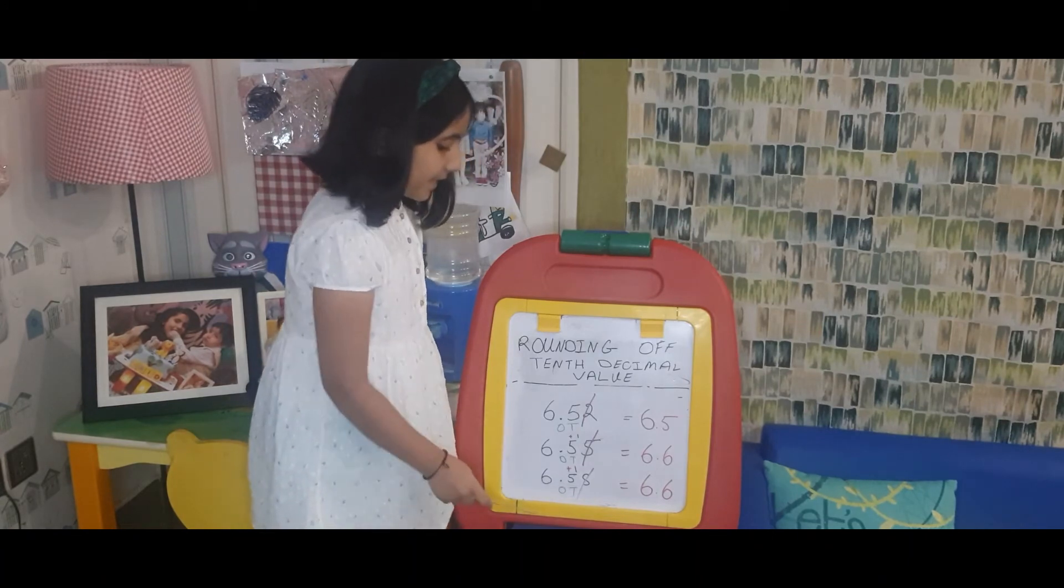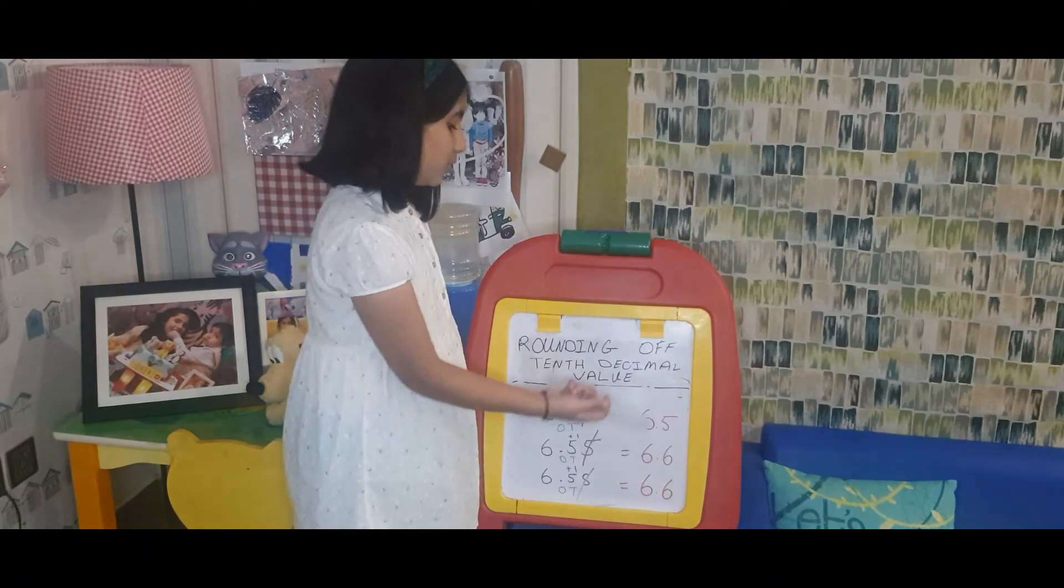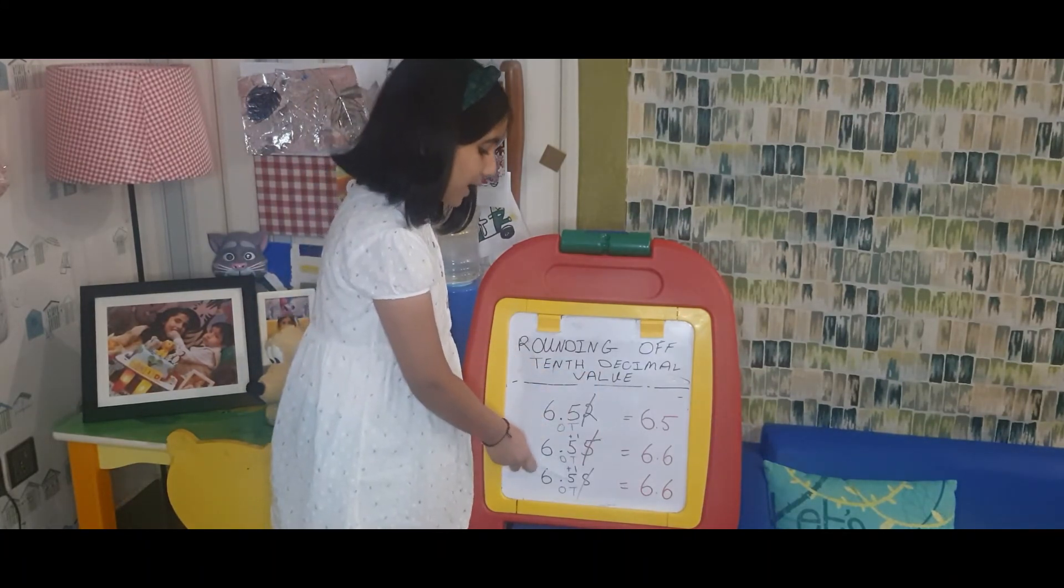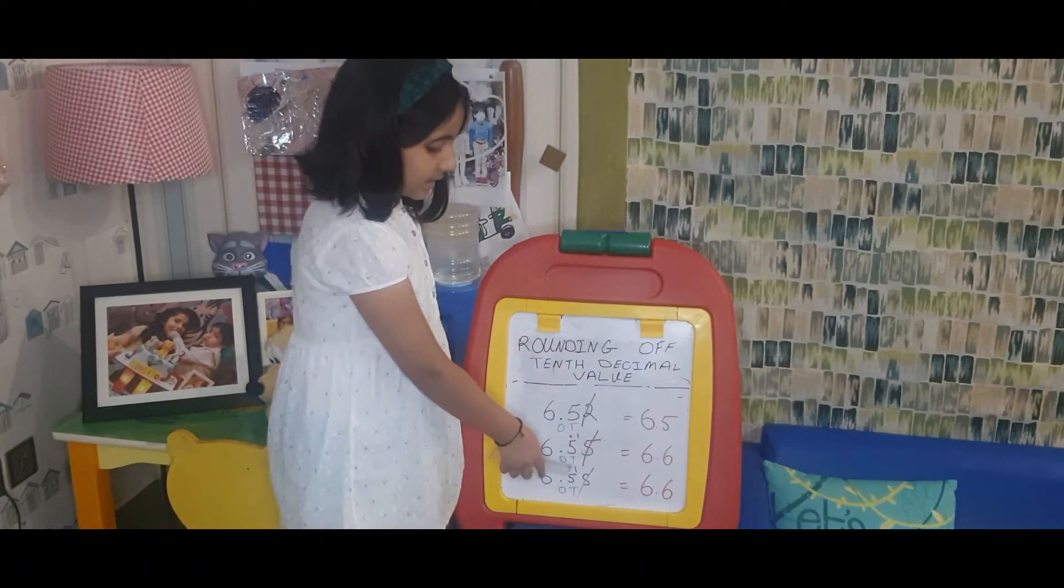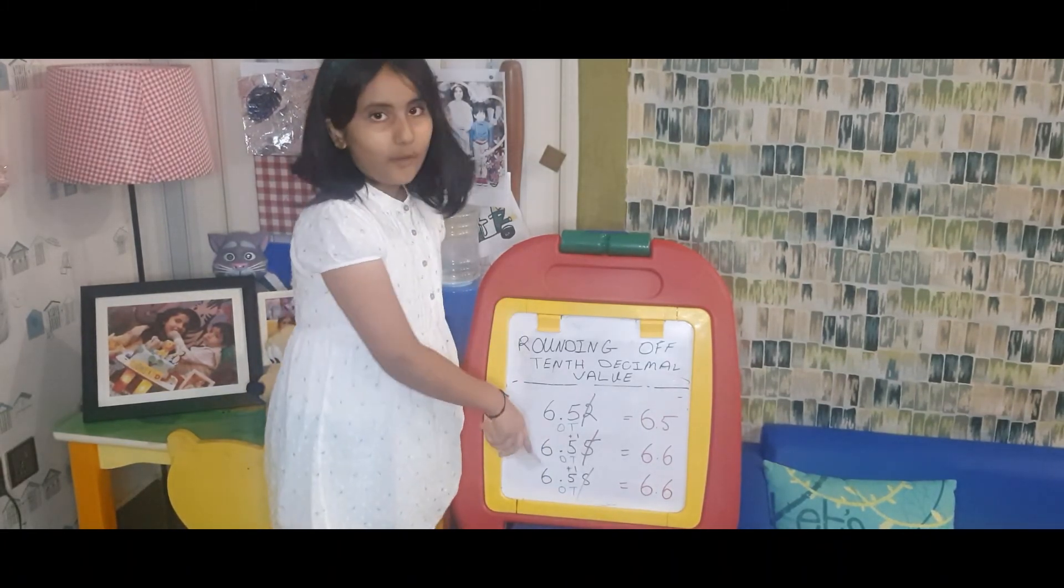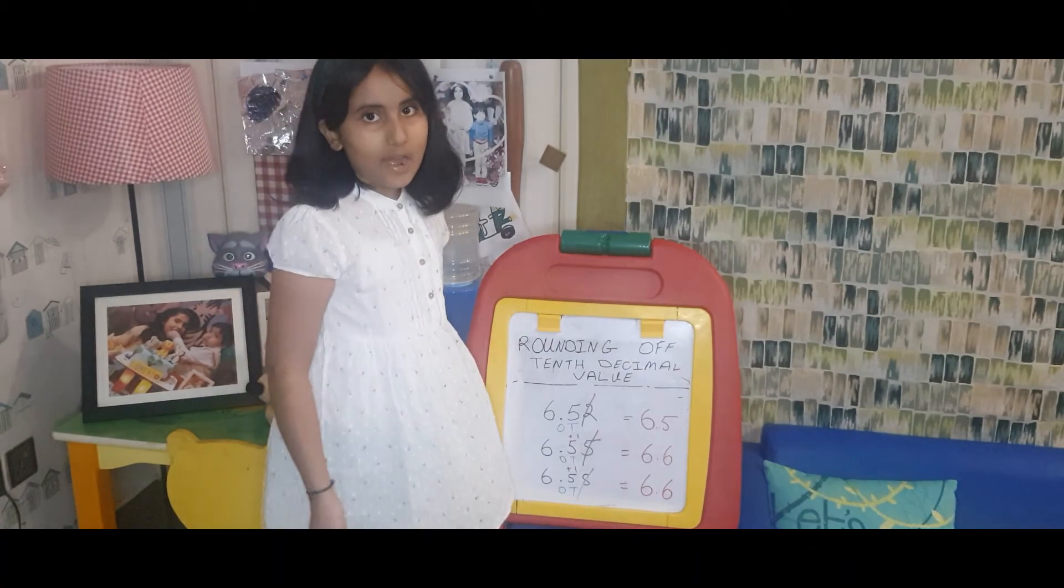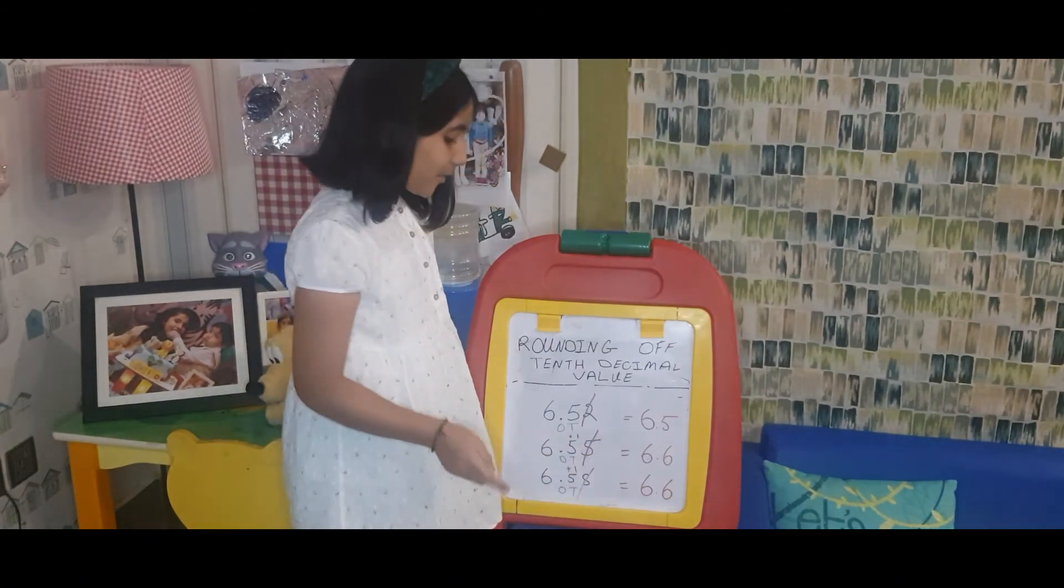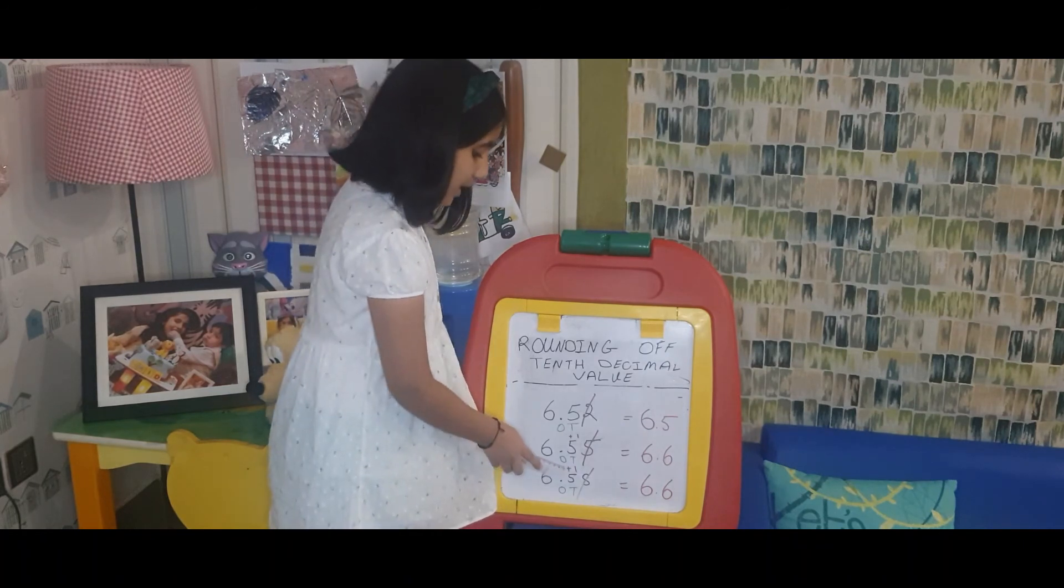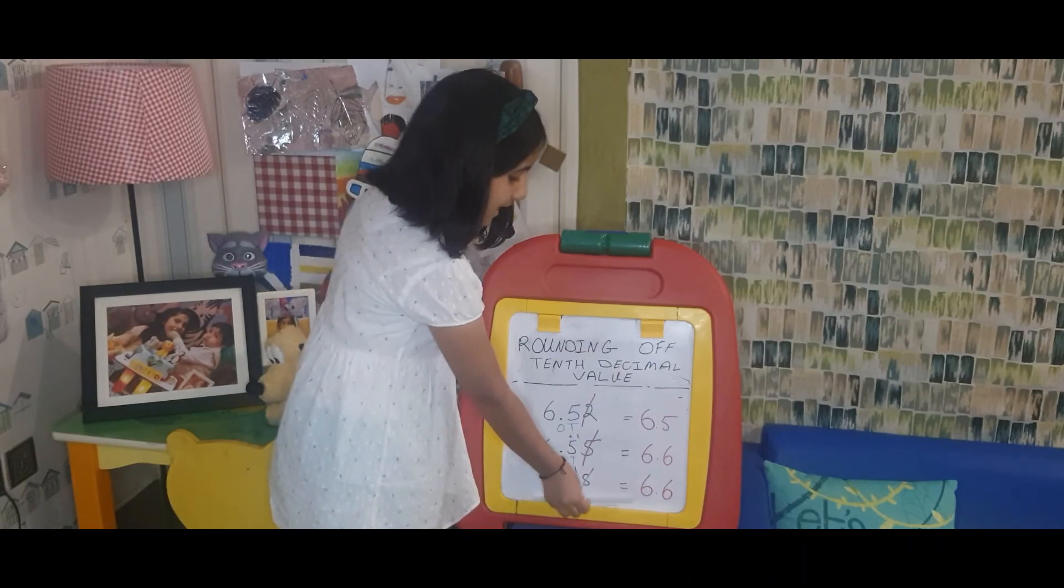We have found the tenth decimal value of this number, which is 5. There's a digit left, which is 8. We will see if it is equal to 5, more than 5, or less than 5. It's more than 5, so we will delete it, but before deleting it we will add one here, and the total answer will be 6.6.